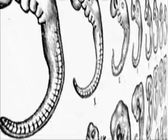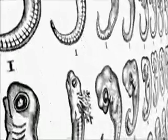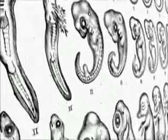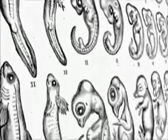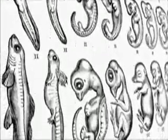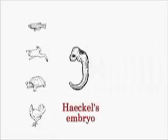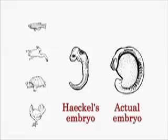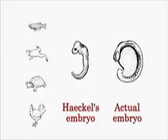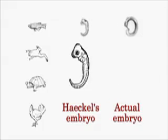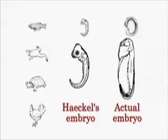Differences arose only later. The problem is that he faked his drawings — the early vertebrate embryos don't really look that similar at all. The problem with Haeckel's drawings wasn't just that they were inaccurate; they were actually false in many cases.